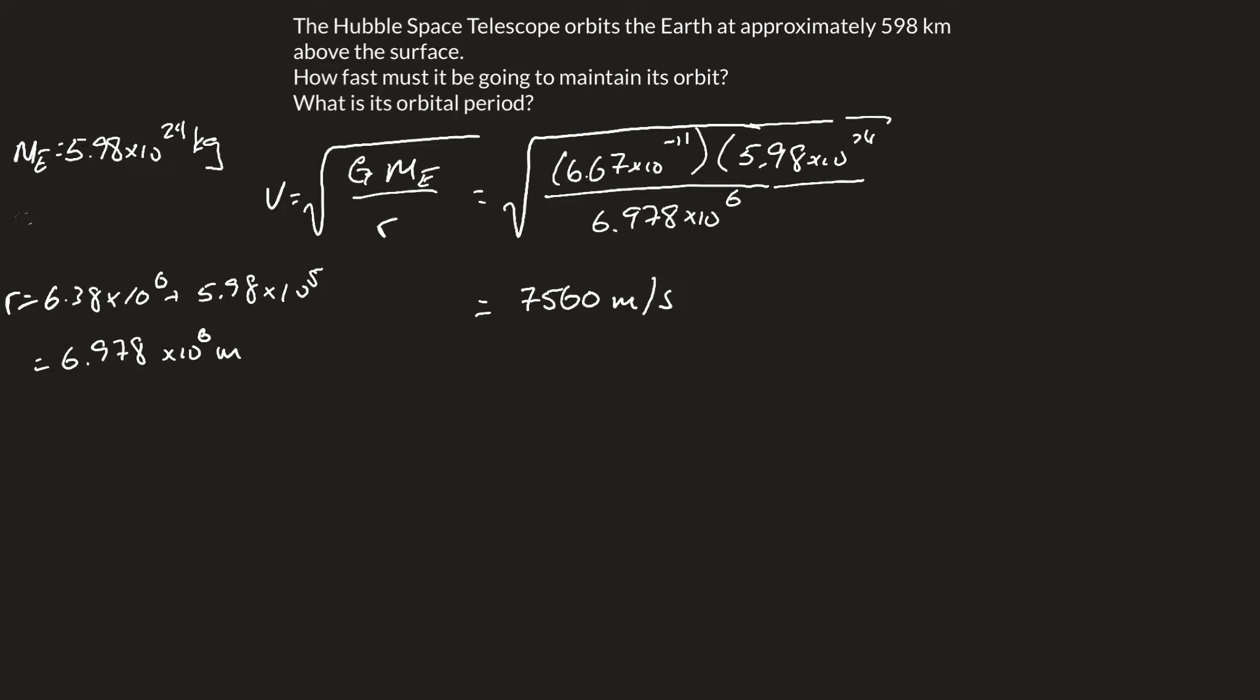Next up is to solve for the orbital period. The orbital period, in this case, we're dealing with it traveling in a circle. So we need to recall that the diameter of a circle is just 2 pi times r. We can solve for d, which is going to give us 2 times pi times what we solved for previously, 6.978 times 10 to the 6, in meters.